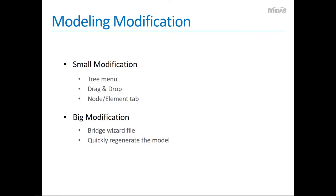First, we will see how small modifications can be made by using the tree menu, drag and drop, and node and element tab. If you want to make big modifications such as changing the layout of the bridge, girders, or bracing members, then importing the bridge wizard file and quickly regenerating the model would be more suitable.